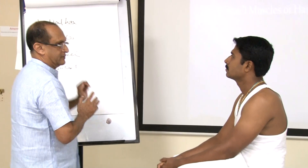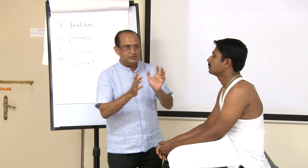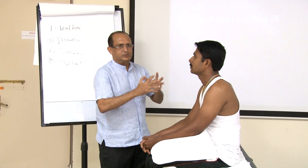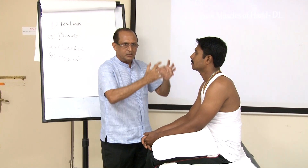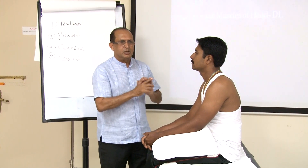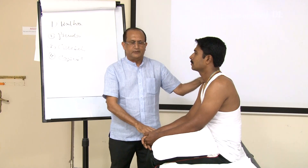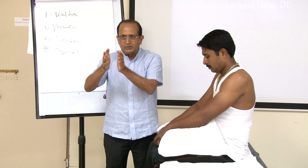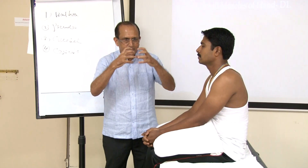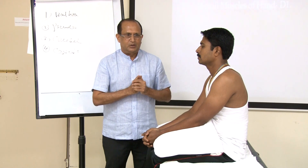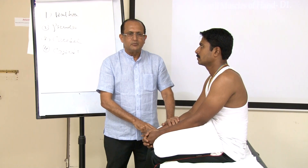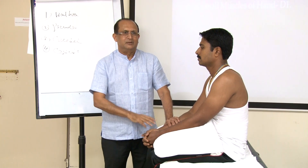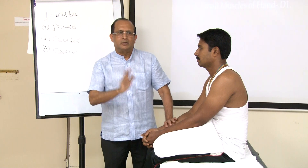Pseudo-bulbar dysarthria means all the cranial nerve nuclei are supplied by cortico-bulbar fibres from the cerebral cortex. If those fibres are paralysed, you get pseudo-bulbar dysarthria. This is a spastic dysarthria — the precision of connected speech is lost. The patient will ramble together all the words. If you ask him to say 'British constitution,' he will not be able to pronounce the individual syllables.